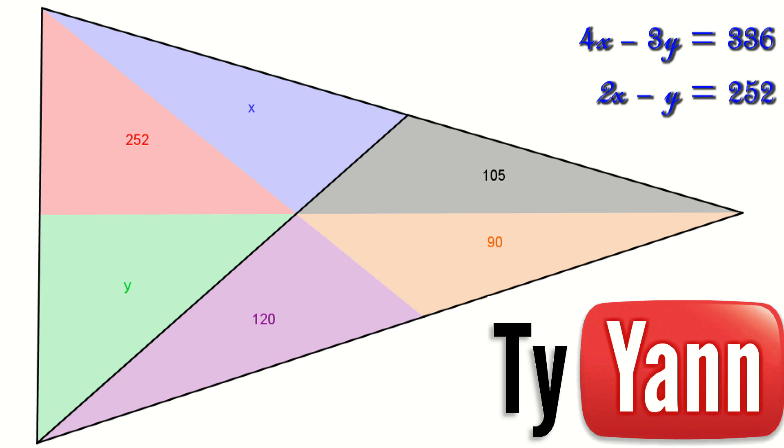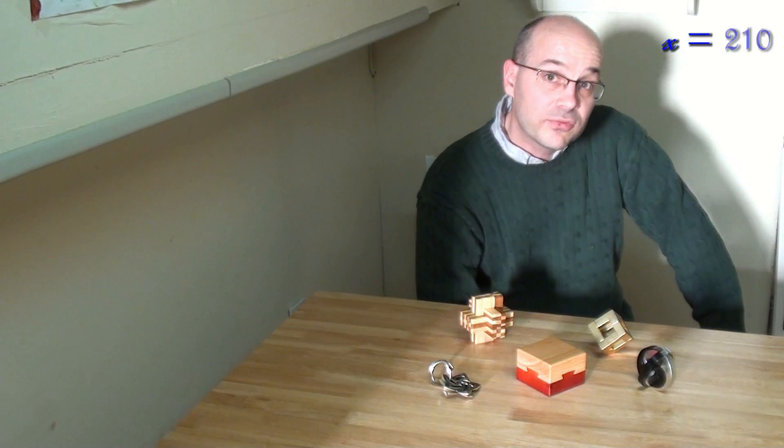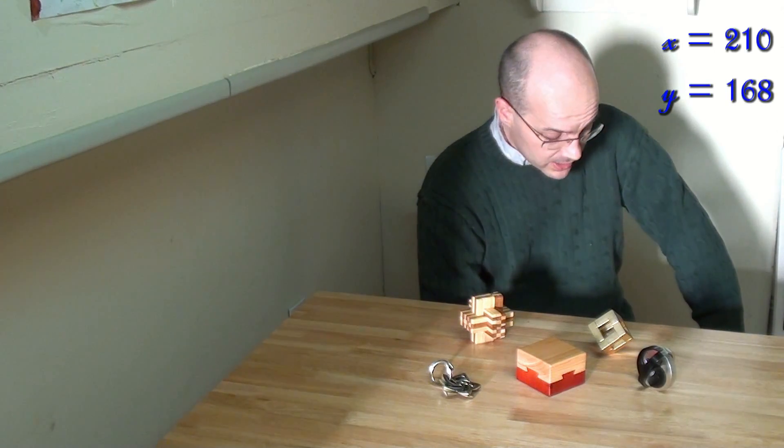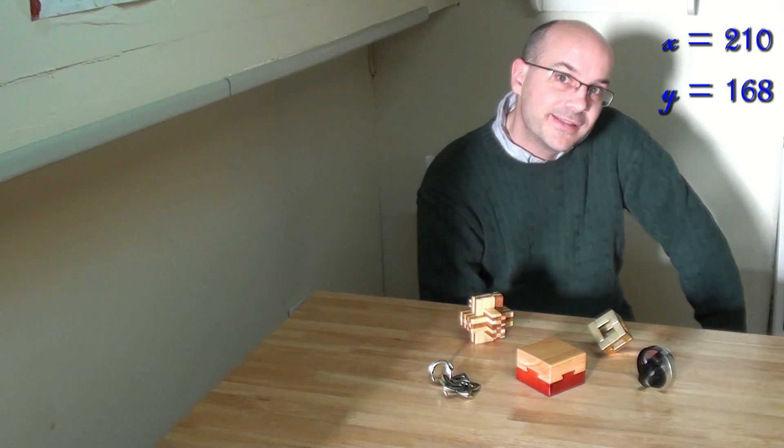And after that, we have a set of two equations with two unknowns. We solve this and we find the solution. And we get for x, 210, and for y, we get 168.